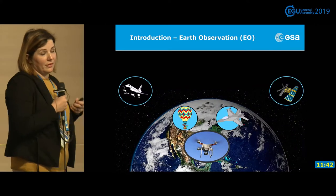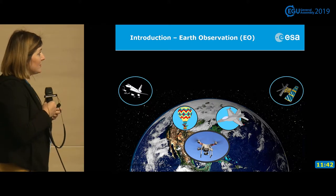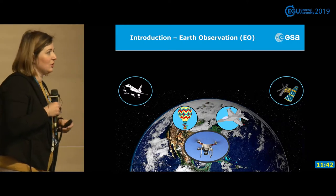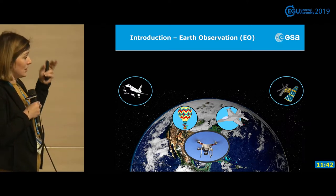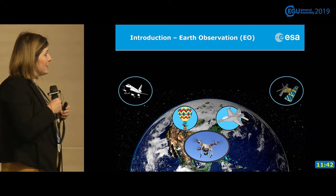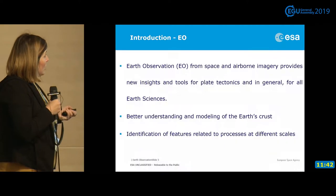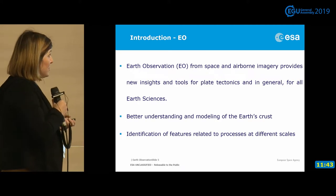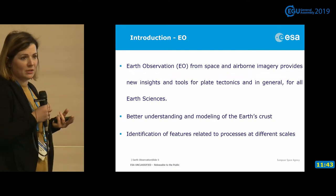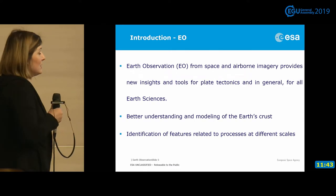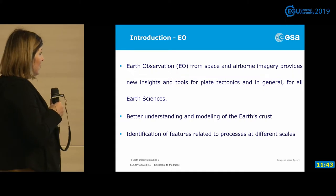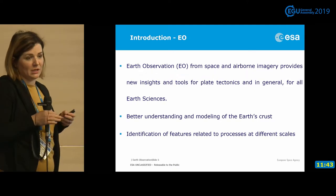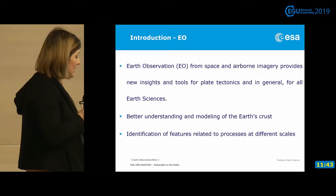How do we observe these phenomena? We can observe them from Earth observation — remote sensing — anything which is not in-situ data. We can start from drones, balloons, airplanes, and finally satellites. Earth observation from space, also airborne imagery, can provide new insight into things we won't see making in-situ measurements. We can understand and model the Earth's crust, and identify features on different scales, from local to even global scale.